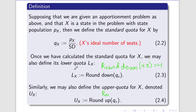Round up is very similar but in the opposite direction. Say I have 16.1 — under normal rounding rules it would just round to 16. However, round up forces the number to the closest whole number that is bigger than what we have, so 16.1 rounds up to 17. 17 is bigger and it is the closest whole number bigger than 16.1. It's important to know how to do these because we're going to be using them again and again.